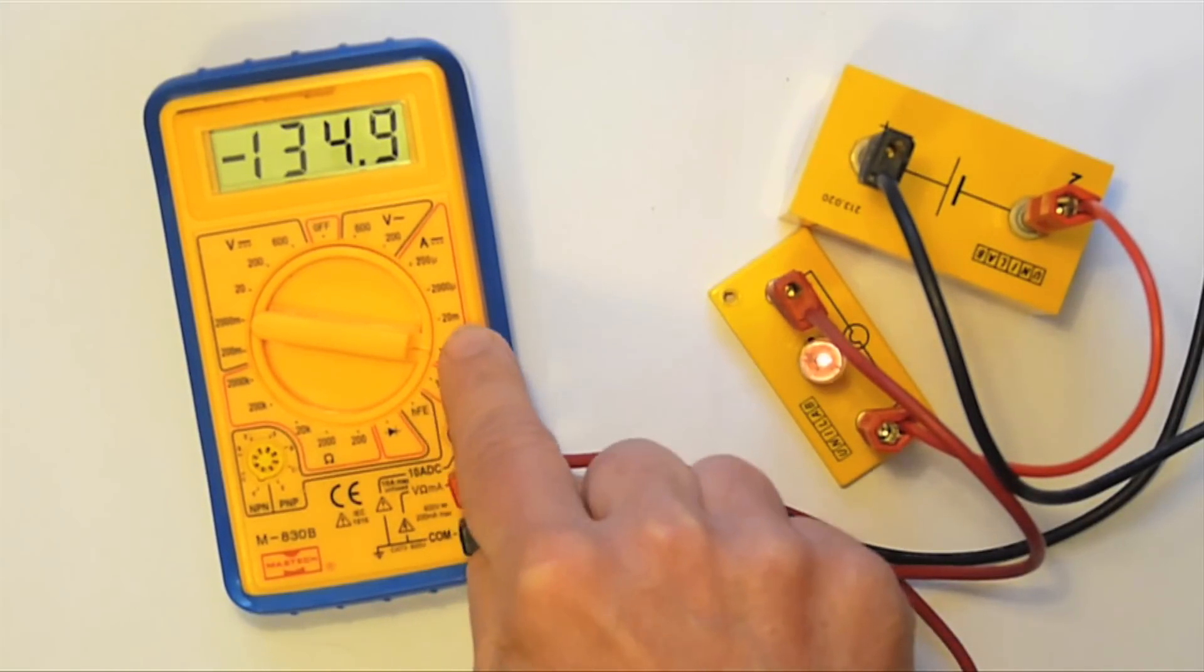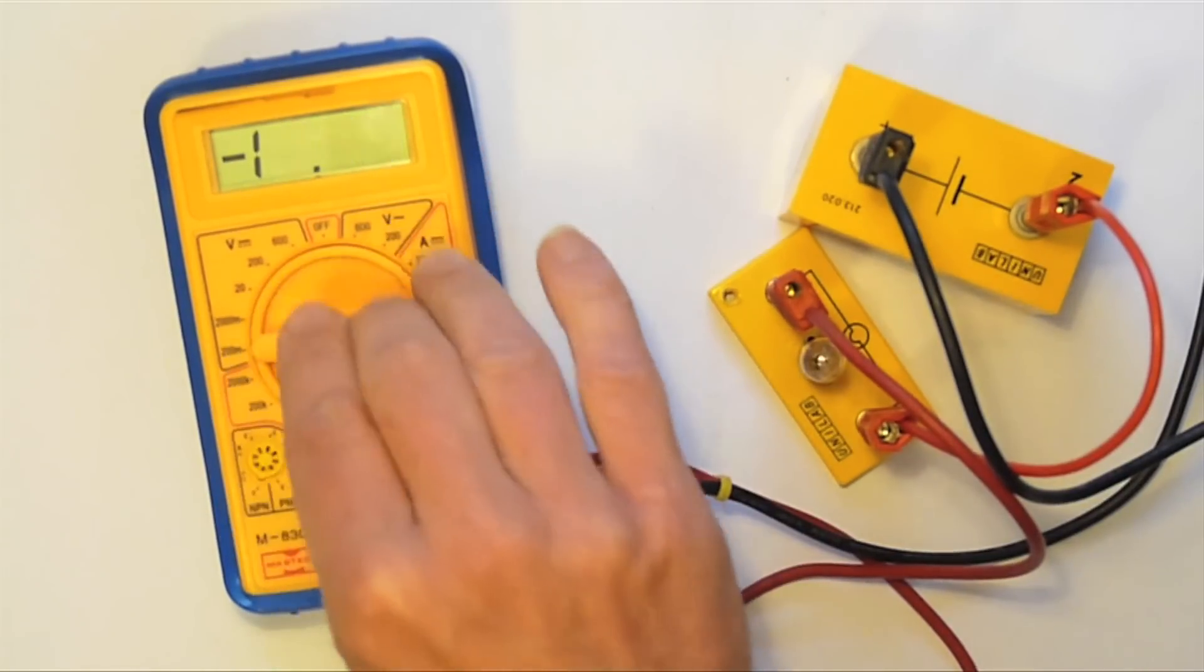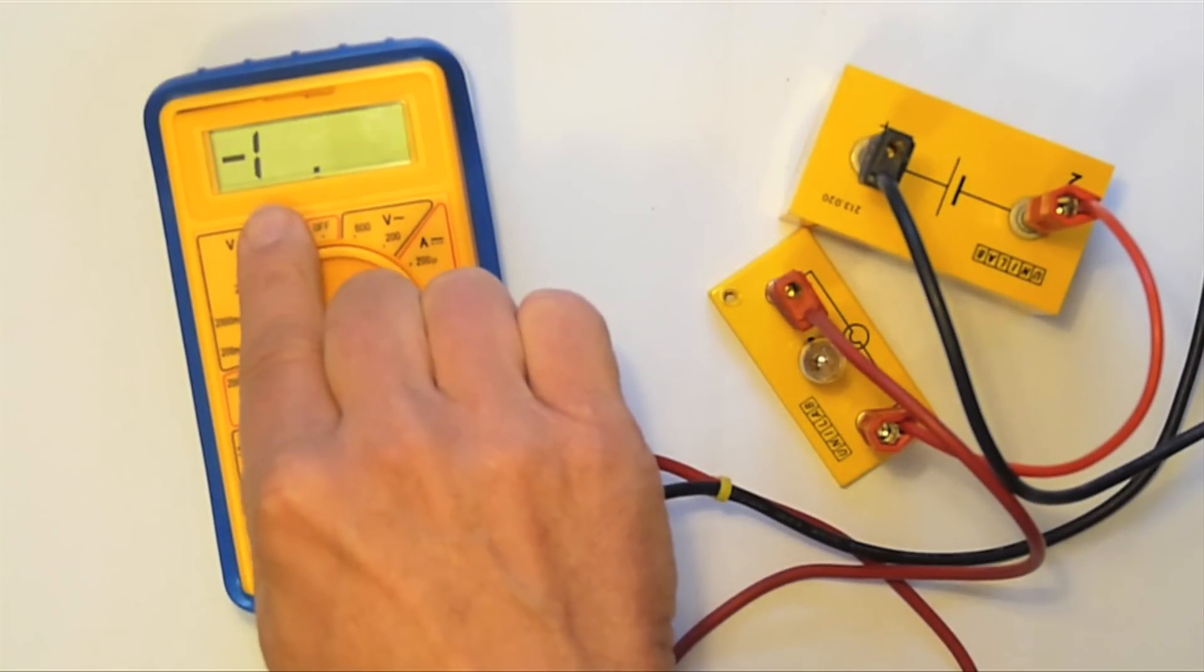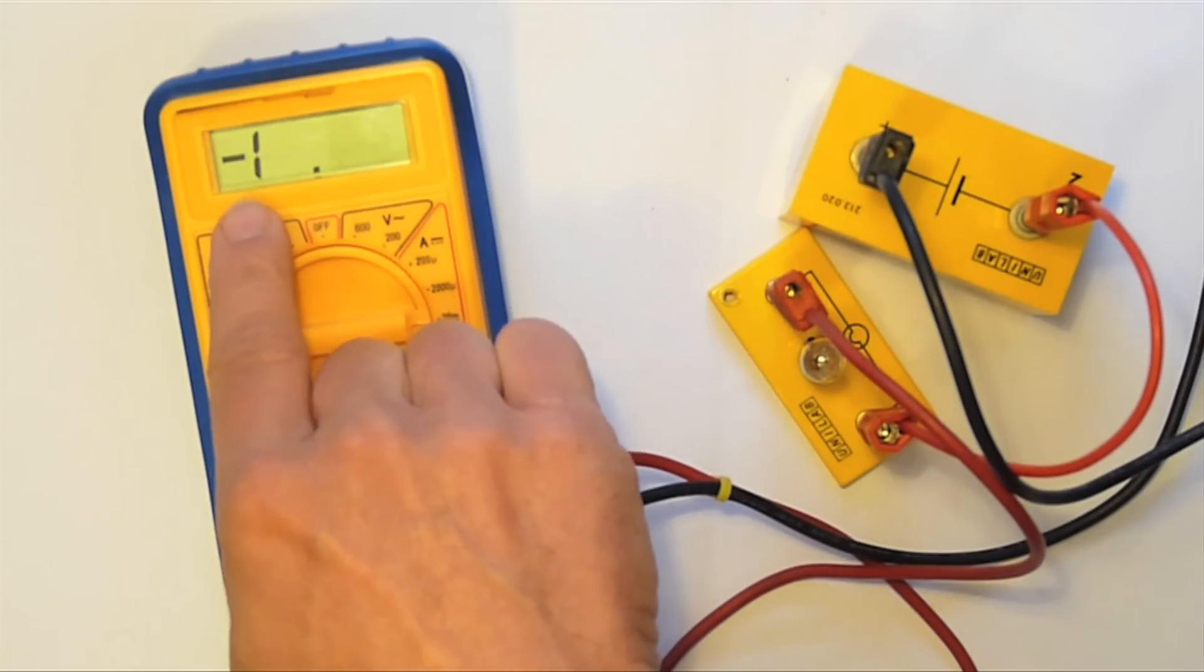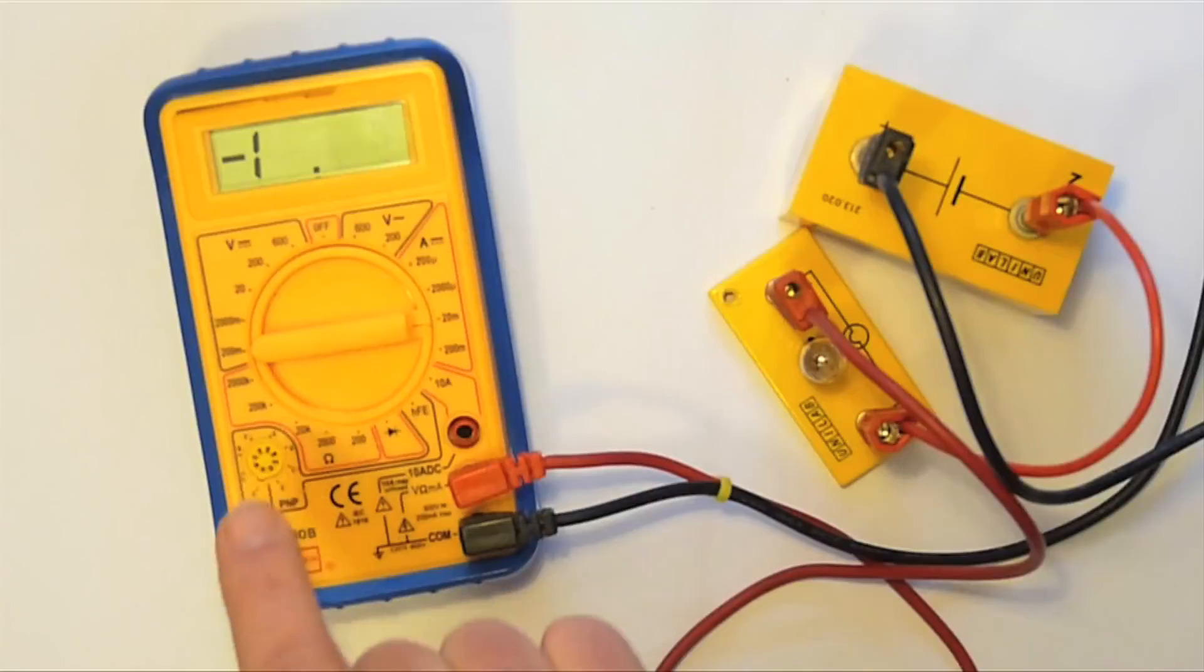If I move to the 20 milliamp range, the current is too high, so I get a 1 on the far left of the display. But there's no harm done.